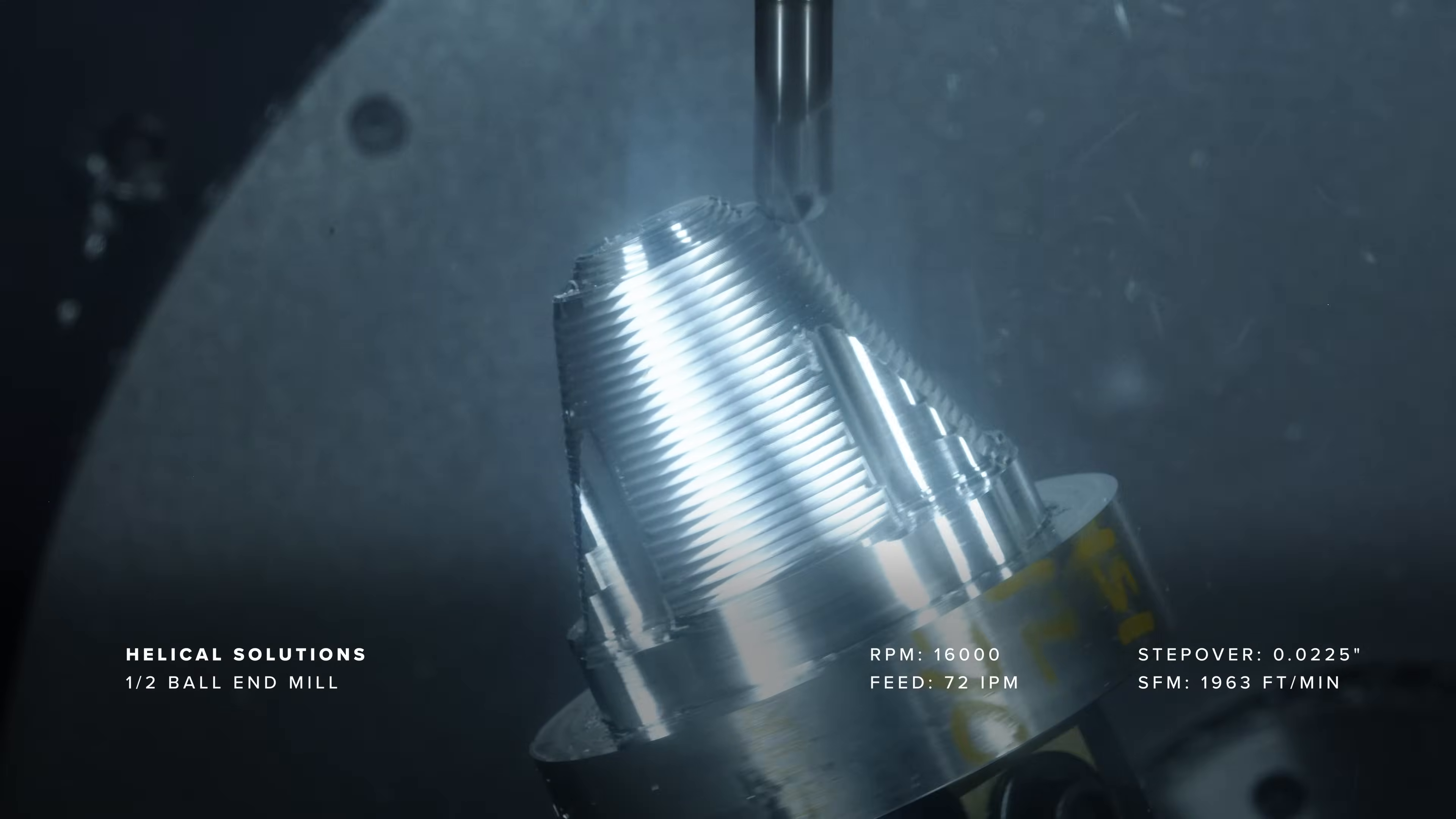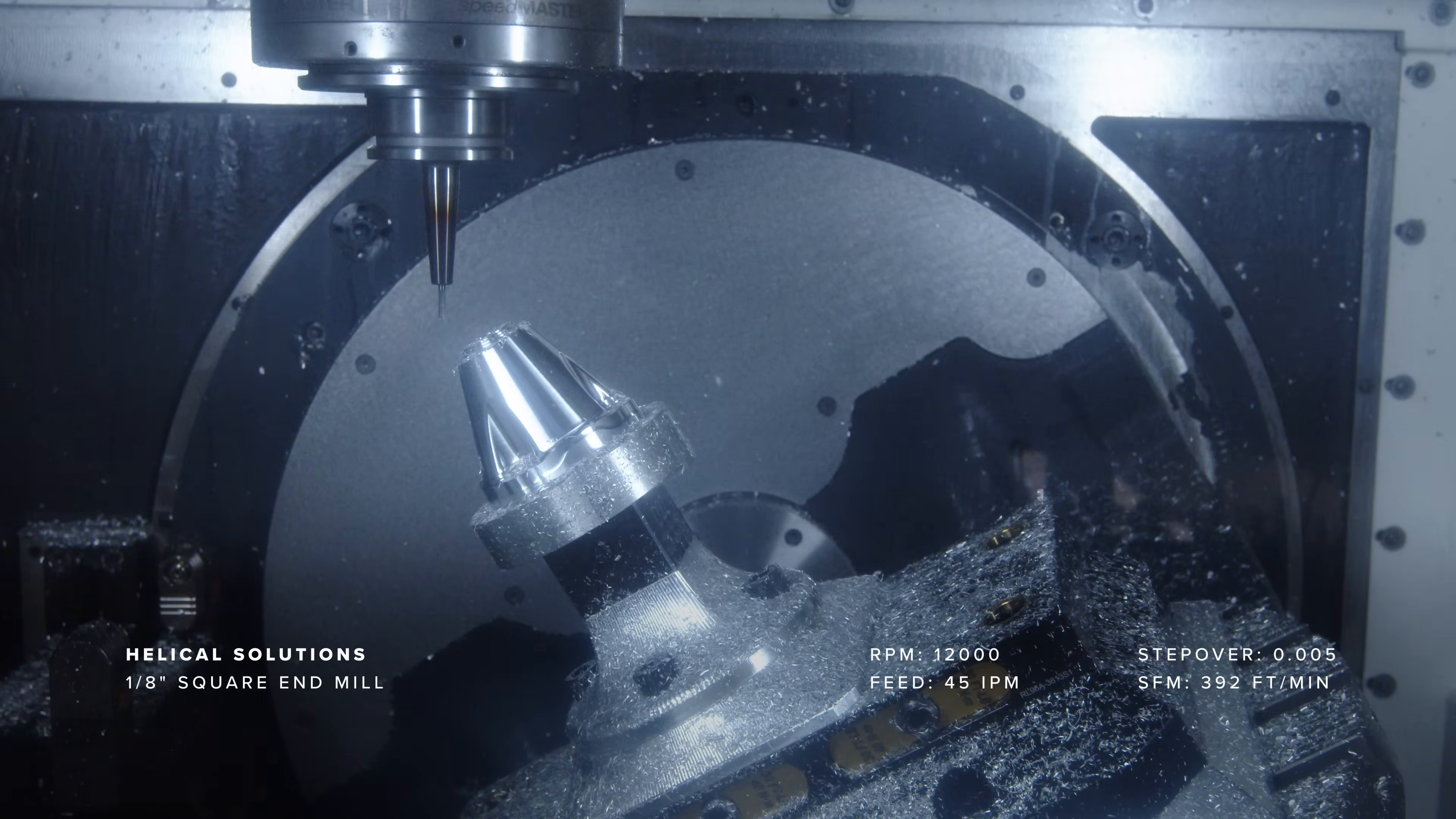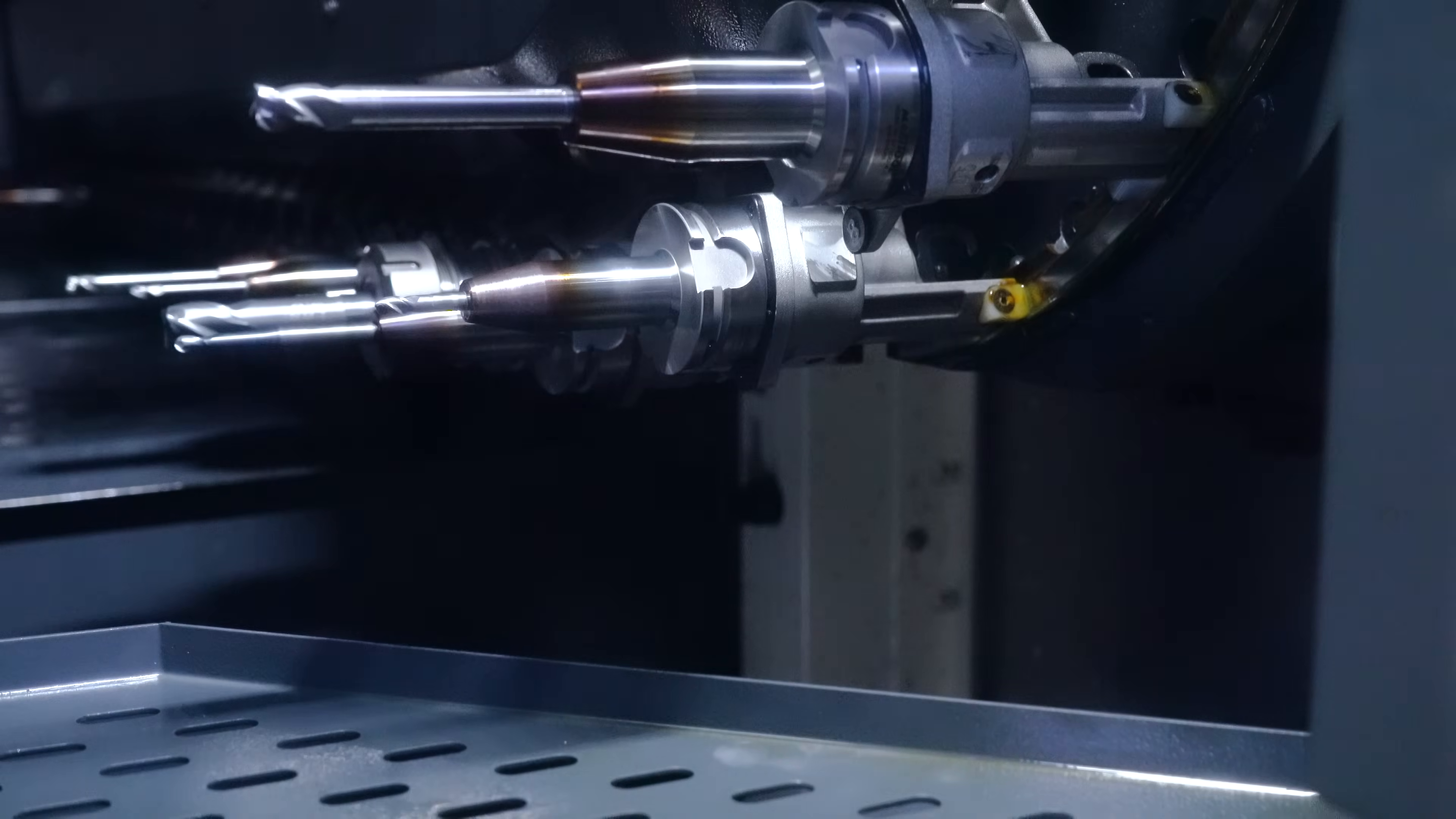One of the tightest tolerance features is a conical surface with a 50 micron profile tolerance tied to three datums. We're using the DMU40's five axis capabilities to do a swarf cut, leaving a smooth and accurate finish without the need for surfacing or form tools.